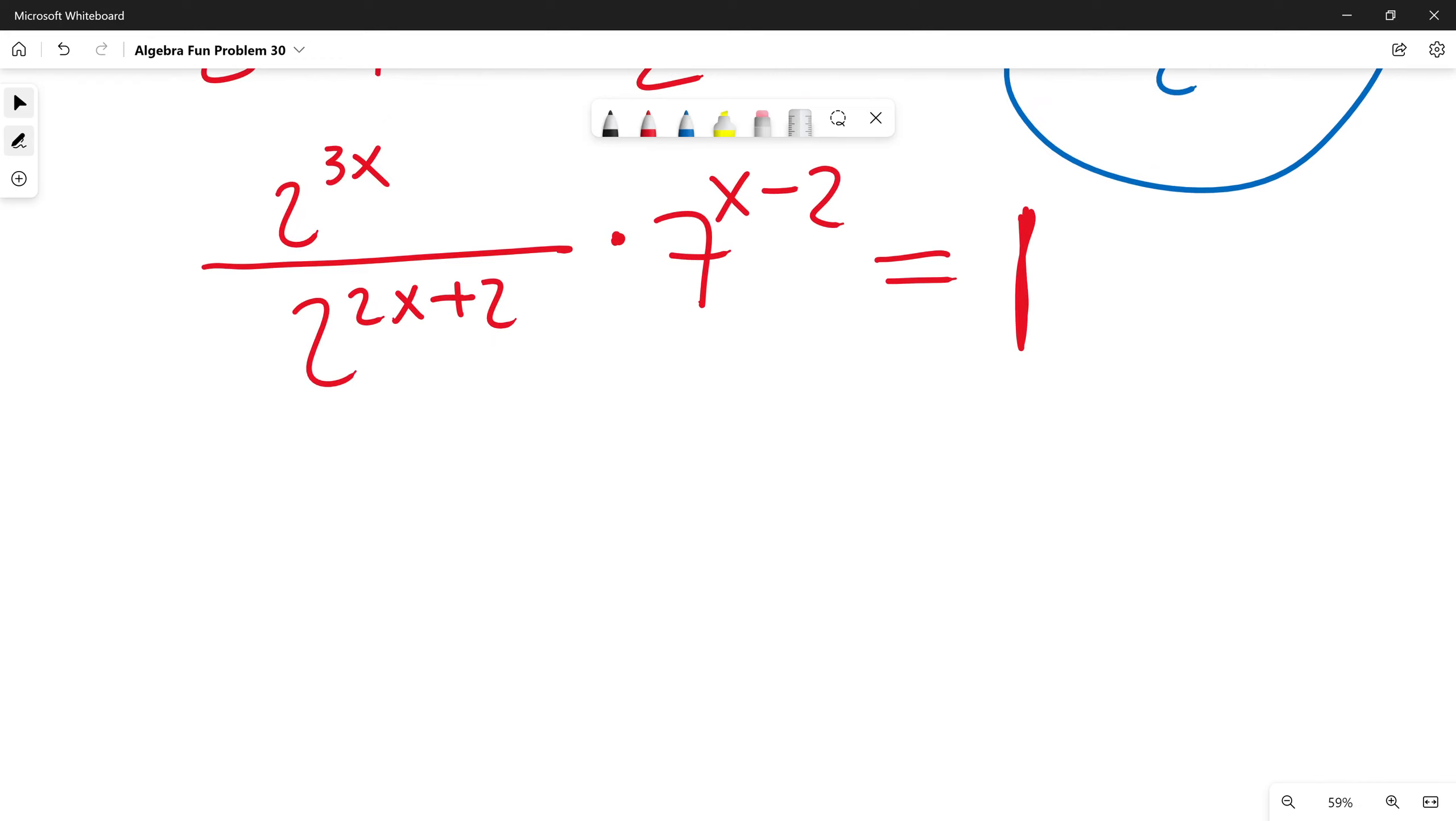Next step I will use the quotient rule for exponents. The base is the same, 2, so I subtract exponents. This will be 2 to the power of 3x minus 2x minus 2.